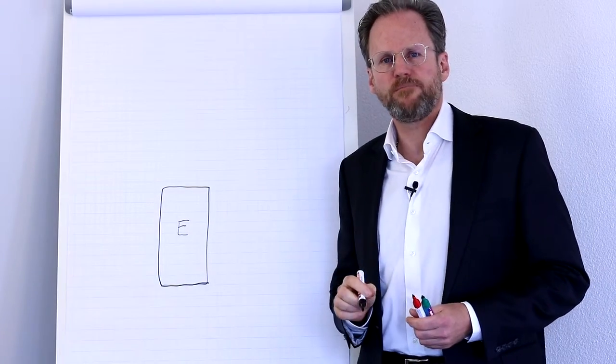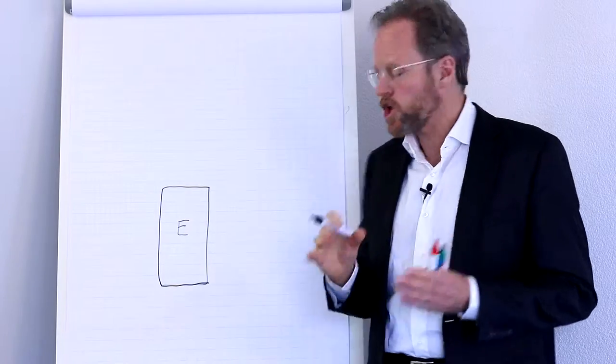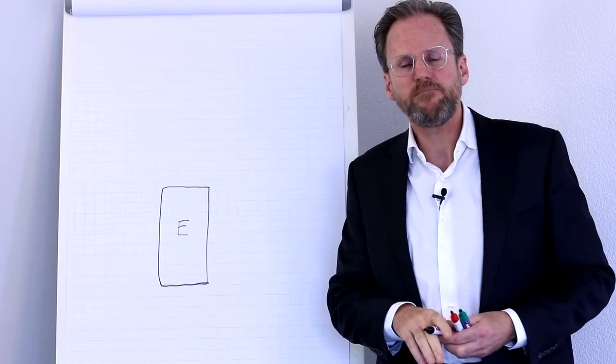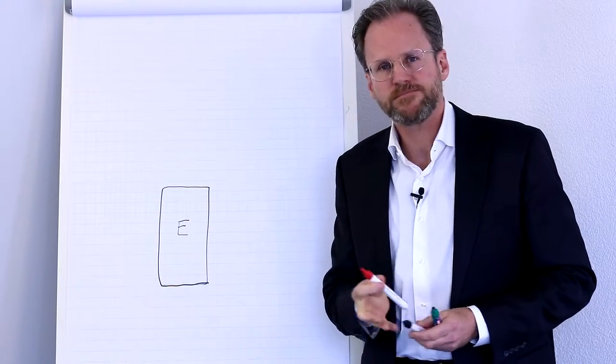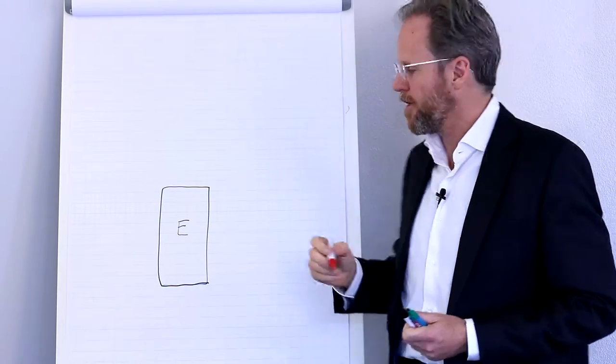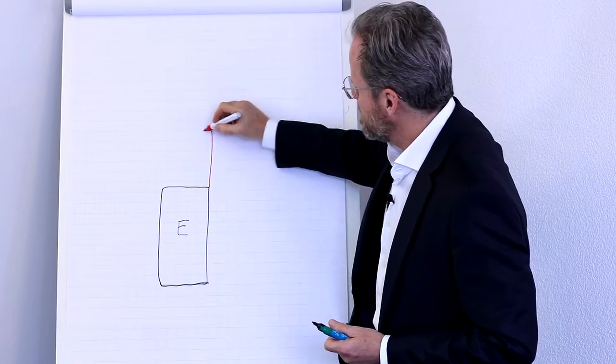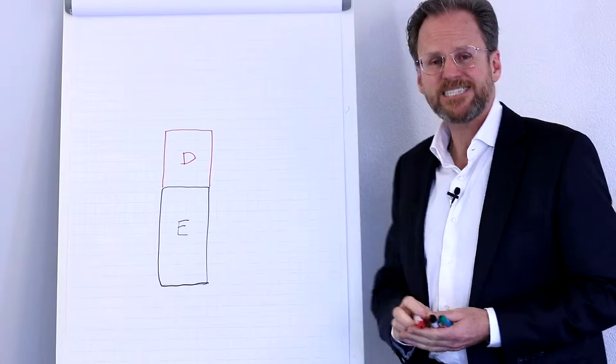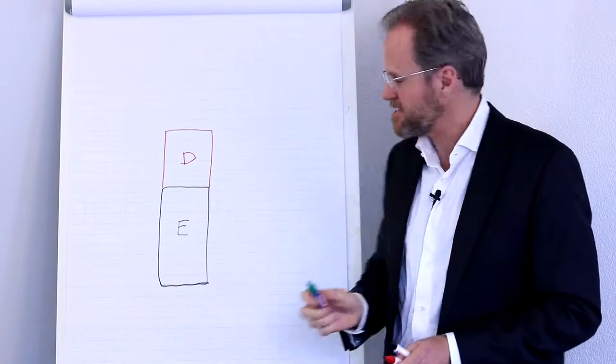When you buy stocks of a company, that money goes into the equity of a company. On top of that, companies decide to borrow money. They go to banks or to the public markets and they get debt. This is how companies finance their business.